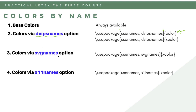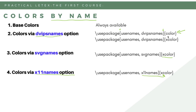There are also SVG name colors, which are even more numerous than dvipsnames colors. However, the SVG names option is only available in the xcolor package. The dvipsnames option is available in both the color and xcolor packages. Additionally, using the x11names option in xcolor gives access to even more colors. These are the options if you want to use colors by name.